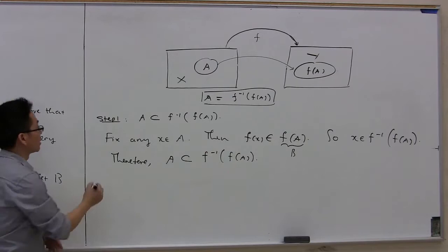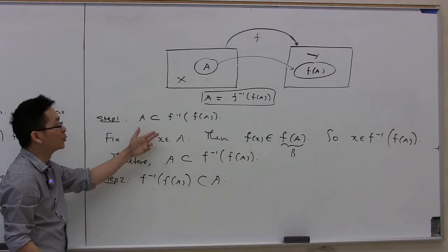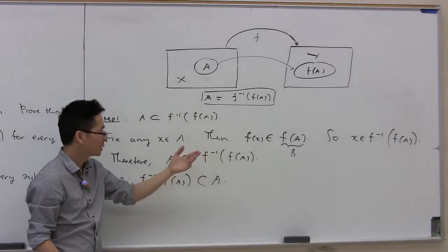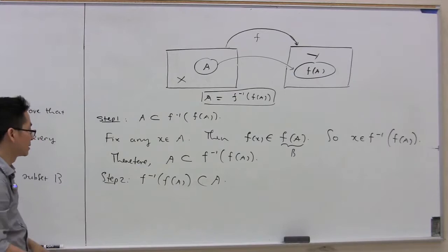Now let's continue with the opposite inclusion. We're going to prove that f inverse of f of A is a subset of A. By the way, in the first part, we did not require that f is a 1-to-1 function — meaning A is always a subset of f inverse of f of A for whatever function f. But to prove this opposite inclusion, we need to use the hypothesis that f is a 1-to-1 function.